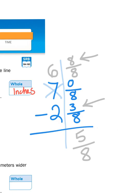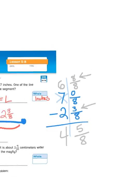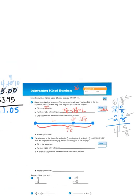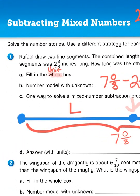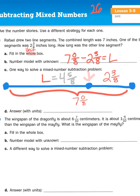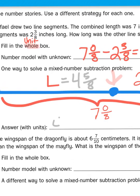And then I subtract six minus two. Six minus two, of course, is four. So my total becomes 4⅝. So L equals 4⅝. My answer is 4⅝ inches.